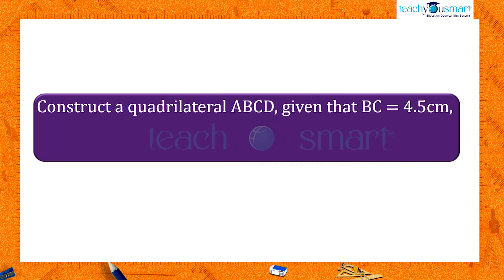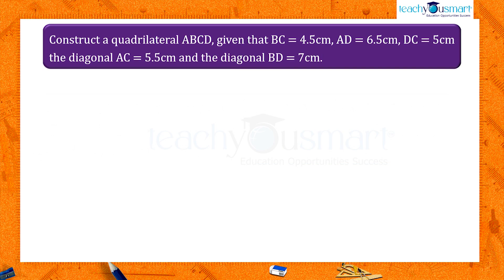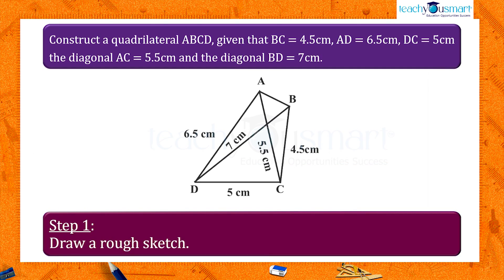Given that BC equals 4.5 centimeters, AD equals 6.5 centimeters, DC equals 5 centimeters, the diagonal AC equals 5.5 centimeters, and the diagonal BD equals 7 centimeters. So firstly, we will draw a rough sketch.